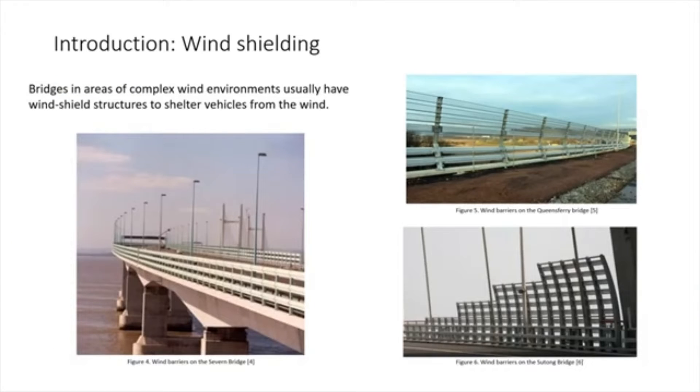Bridges in areas of complex wind environment usually have windshield structures to shelter vehicles from the wind. Figure 4 is the wind barrier installed on the Severn Bridge in England. Figure 5 is the wind barrier installed on the Queensferry Bridge in Scotland. Figure 6 is the wind shelter of the Sutong Bridge in China.